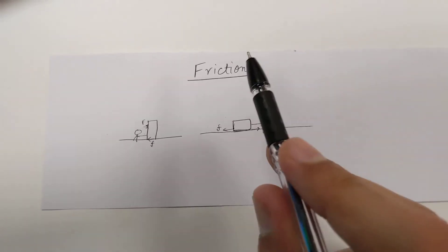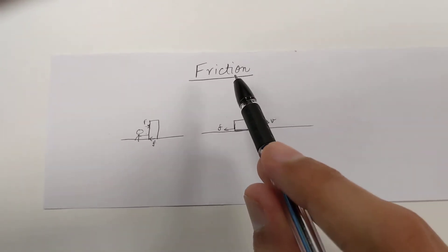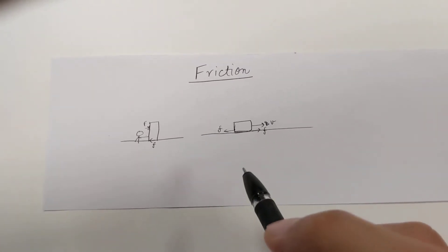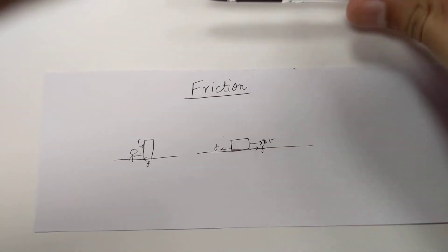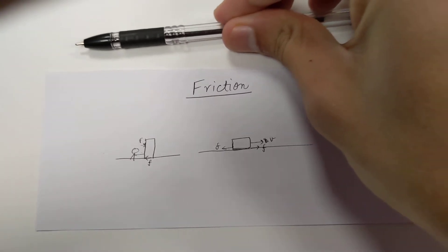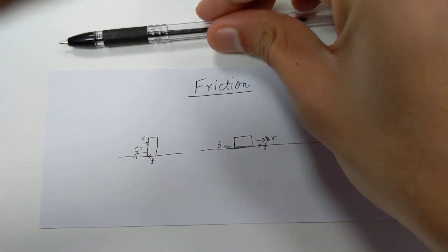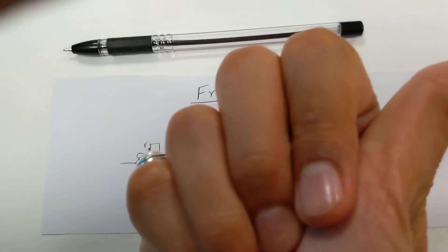Both forces of friction always oppose relative motion. For example, if my pen is moving in this direction on the ground, then the friction will be in the backward direction.